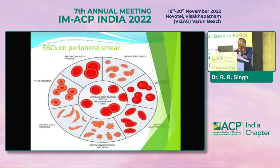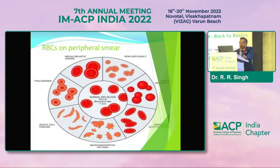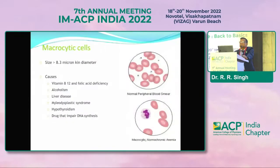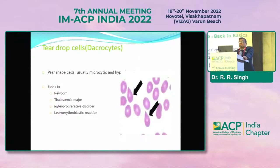When we see RBCs on the peripheral smear, we may diagnose many diseases. In megaloblastic anemia, the size of RBC is equal to the size of WBC. In iron deficiency, the size is less — microcytic. In sickle cell anemia, the shape is like a sickle. In thalassemia, we may find nucleated RBCs. Macrocytes are found in B12 deficiency, chronic alcoholism, and sudden liver diseases like NAFLD. Tear drop cells are seen in thalassemia and newborns.